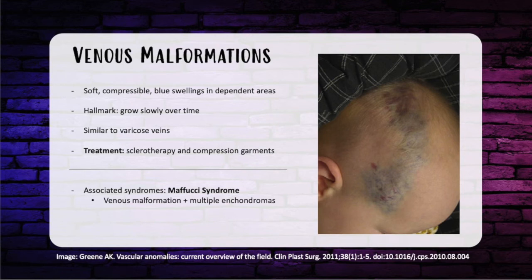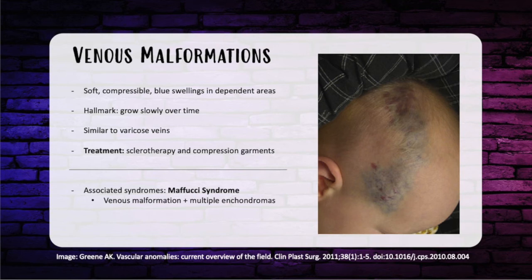With venous malformations, think venous system: they're soft, compressible, with blue swelling in a dependent portion of the body. The hallmark feature is slow growth over time; some lesions are hormone sensitive, so you may not notice them until puberty. 90% of cases are sporadic, and they're most similar to varicose veins. First-line treatment is sclerotherapy and compression garments — sclerotherapy injects an inflammatory substance causing endothelial damage, fibrosis, and shrinkage. Associated syndrome: Maffucci syndrome, which is venous malformation plus multiple enchondromas.